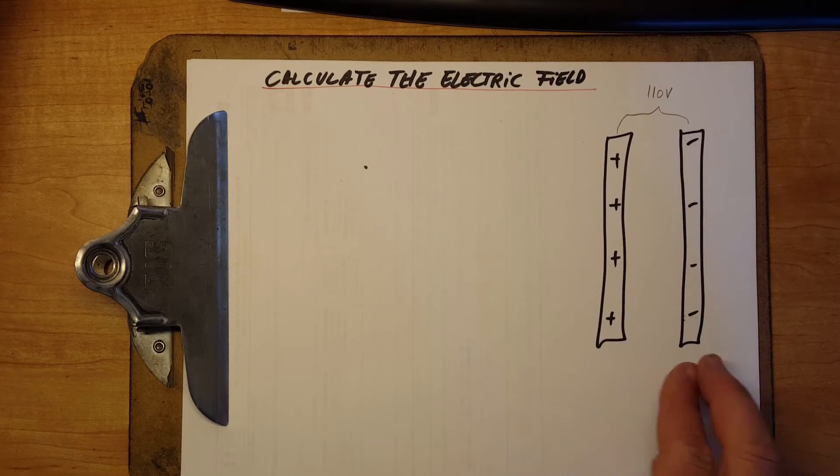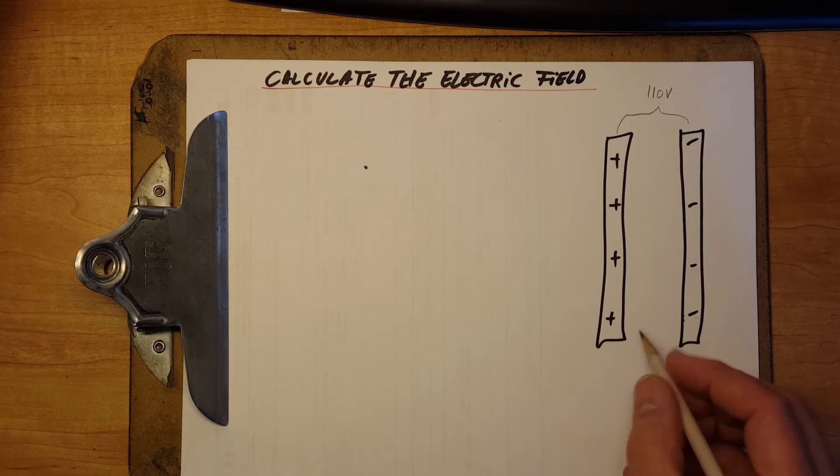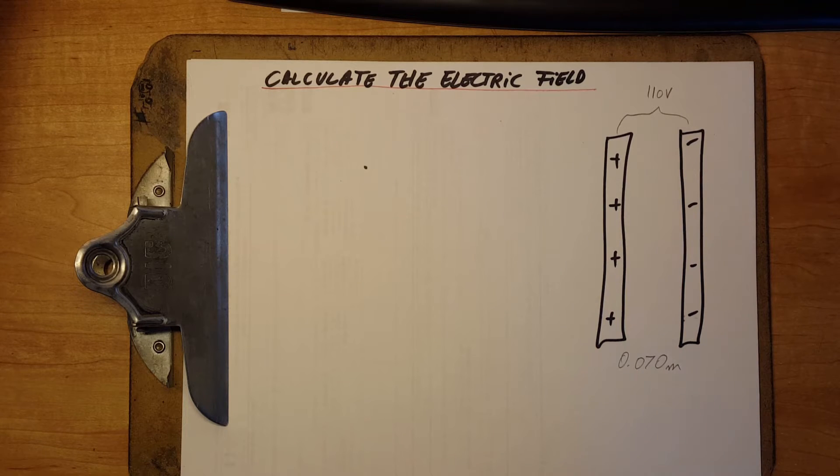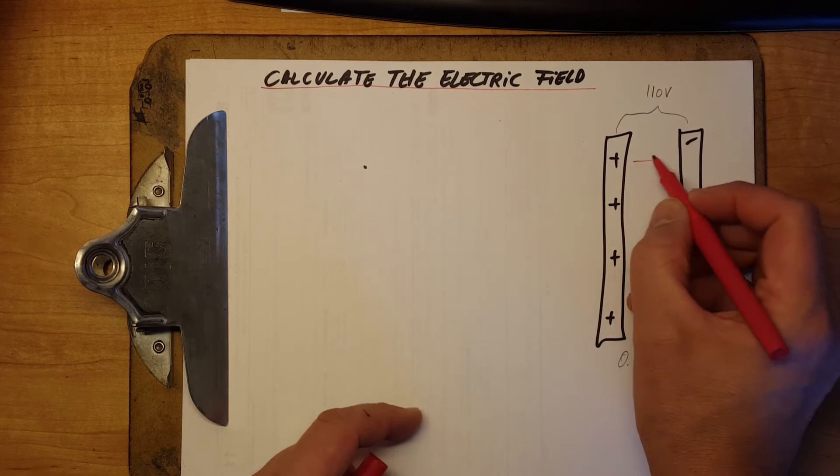If the separation between the plate is 0.070 meters, then what will be the magnitude of the electric field that is between them in this space?